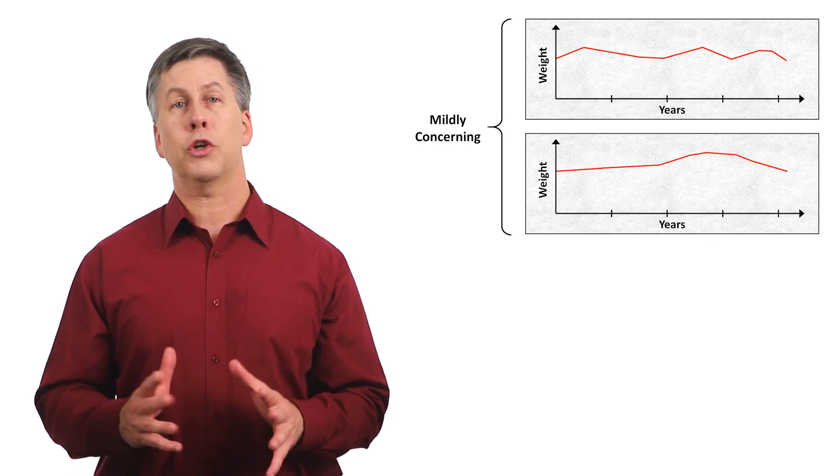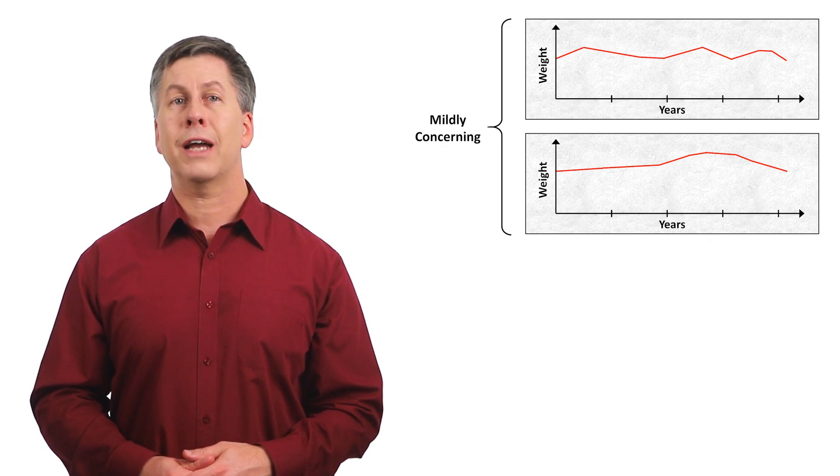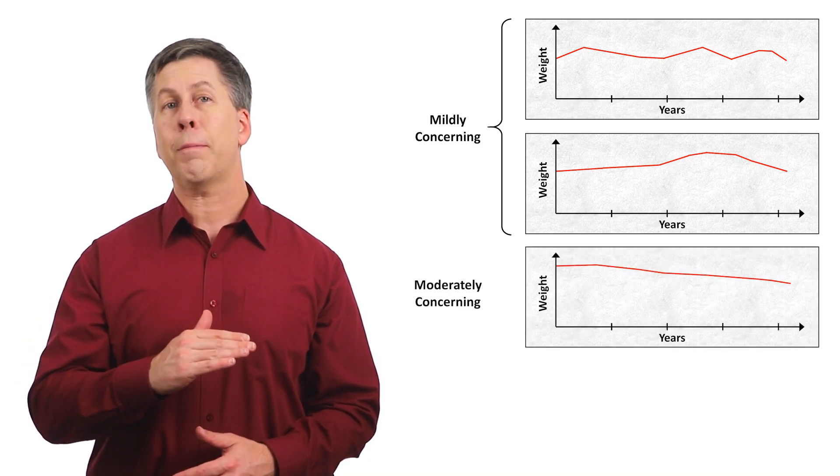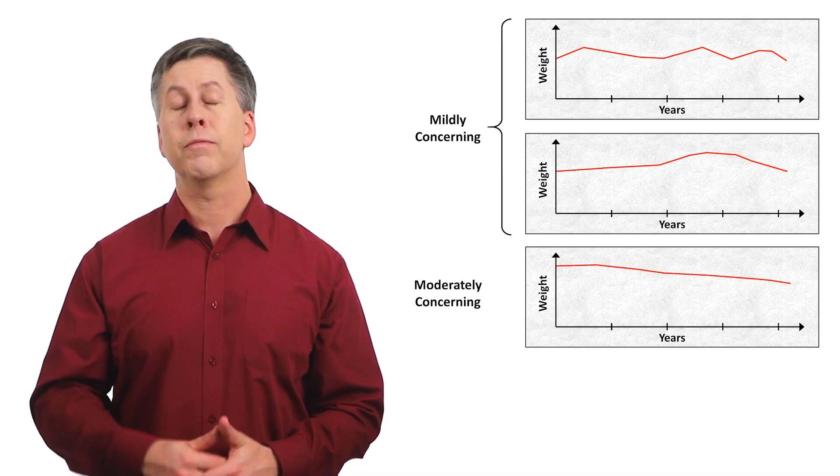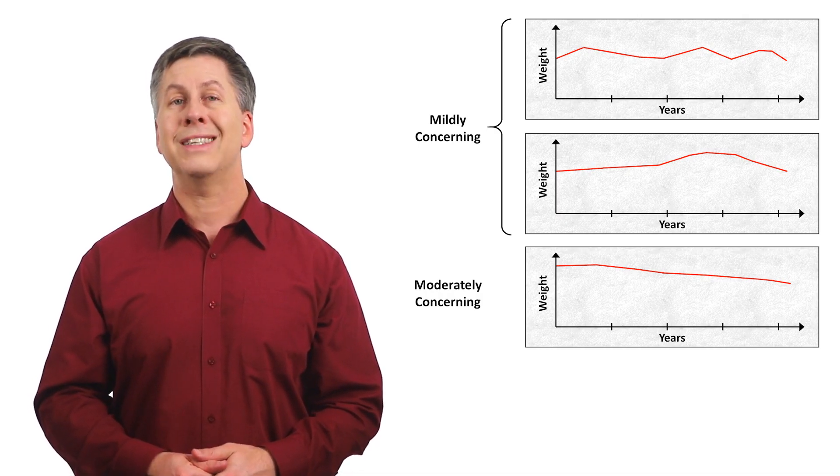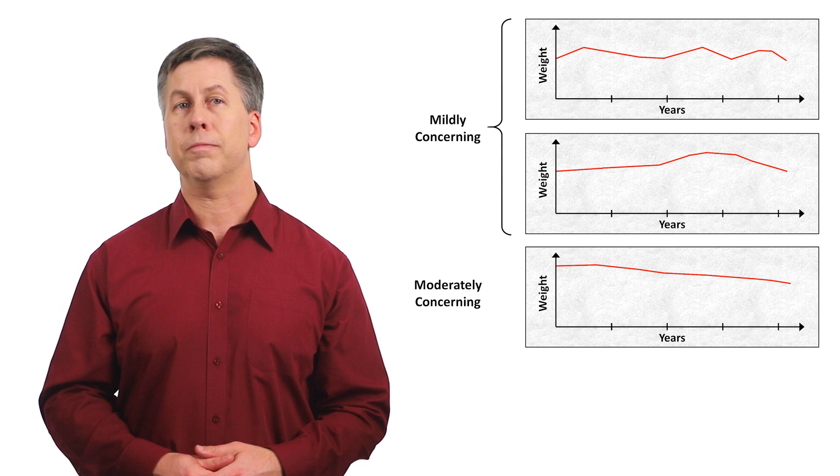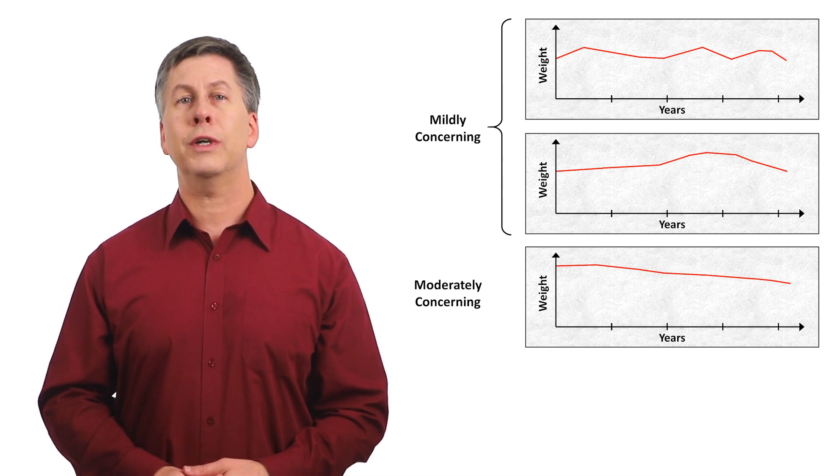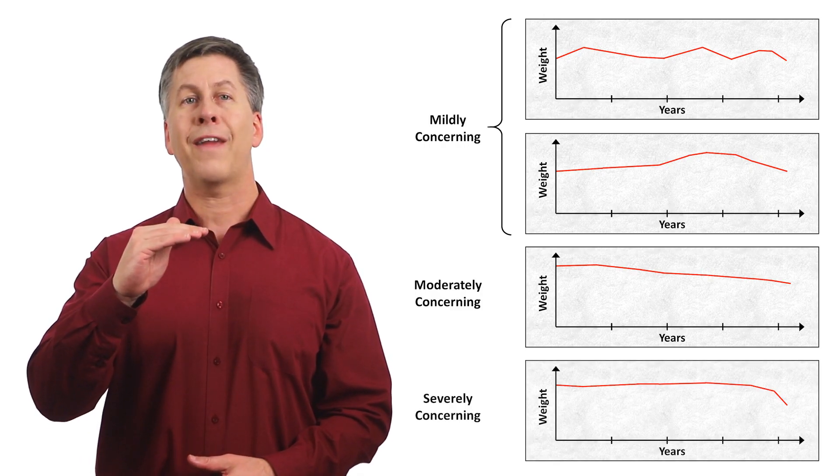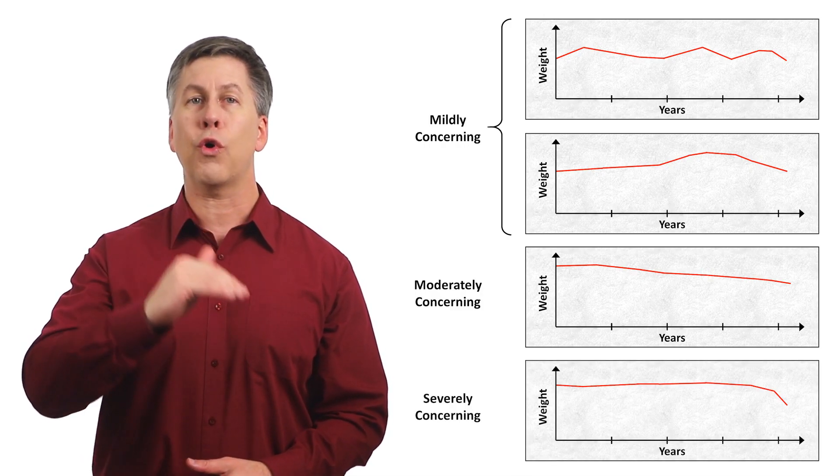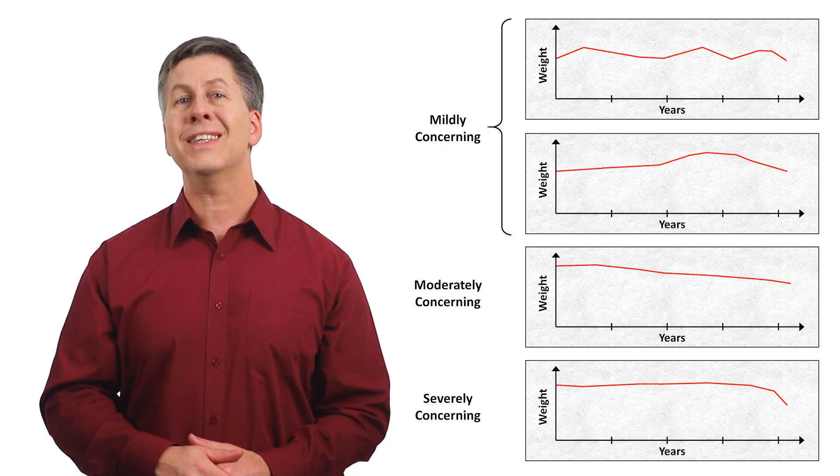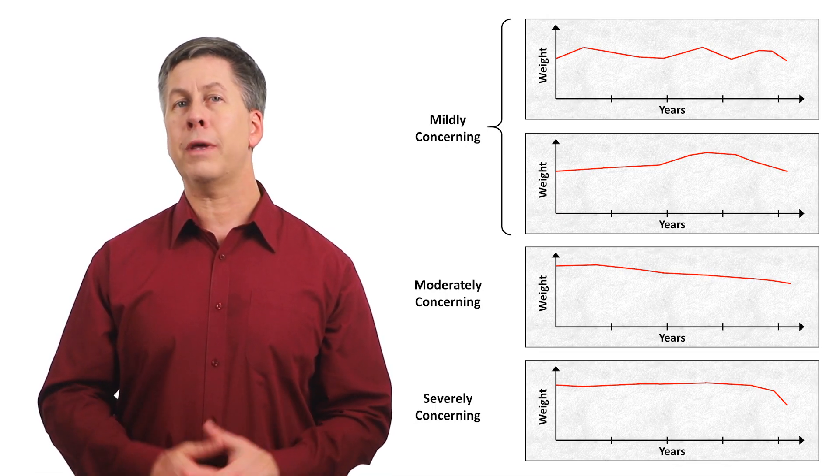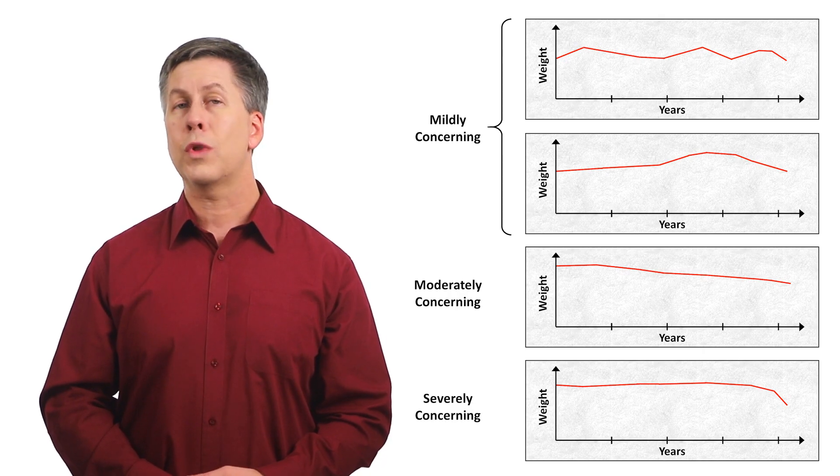The next most concerning pattern is the patient who has had a slow, gradual decline in weight stretching back several years. This is the kind of pattern one sees with dementia, COPD, and diseases associated with malabsorption. The most concerning pattern is the patient who has had a stable baseline weight for a while and then abruptly loses a lot of weight over a few months. This is the most common pattern in occult malignancy and also might be experienced by an individual with severe depression.